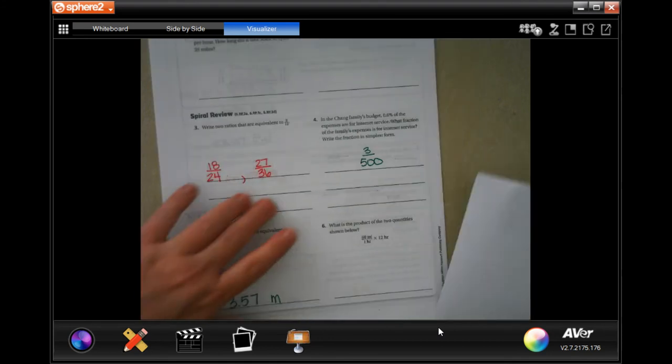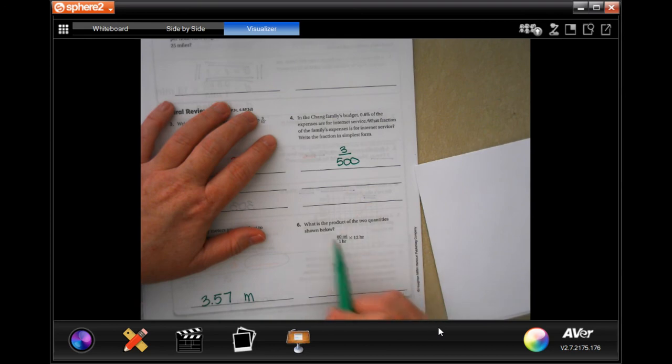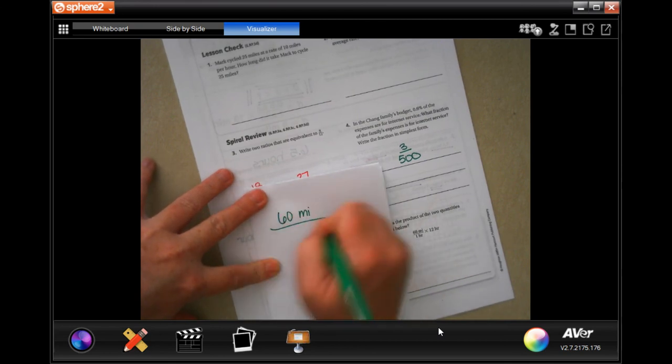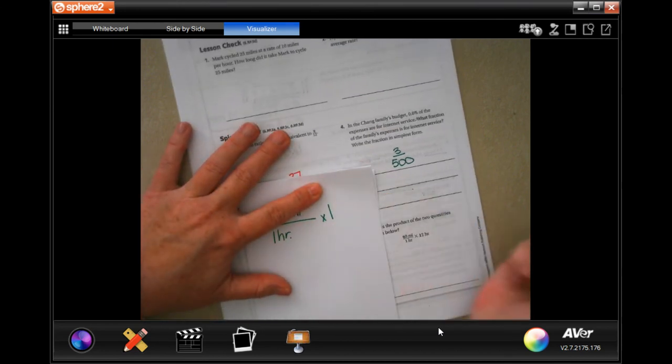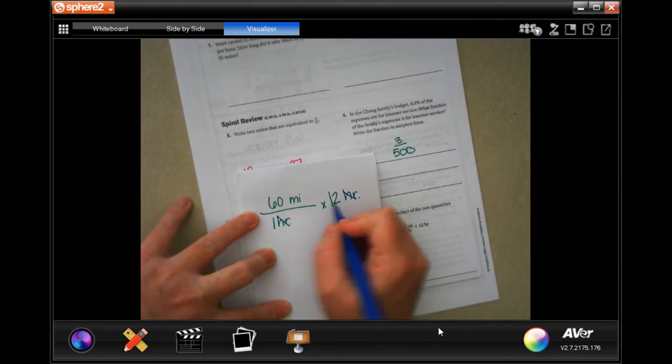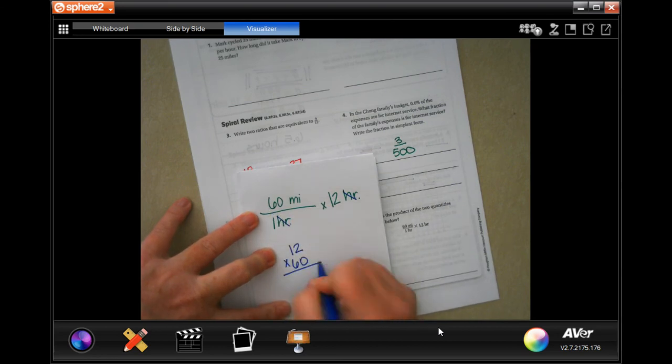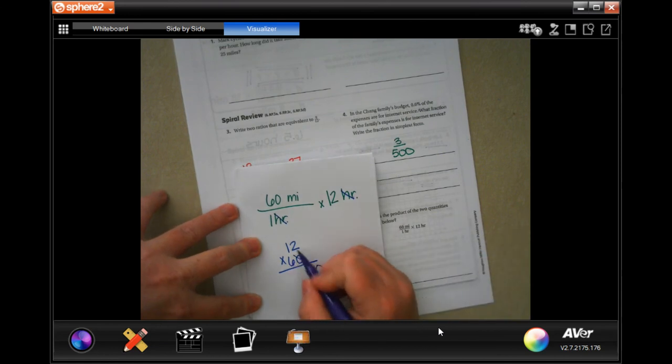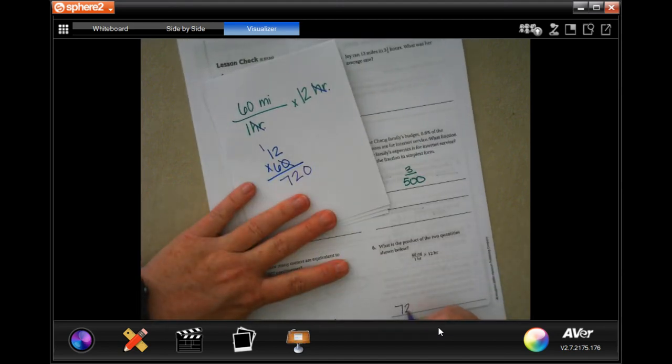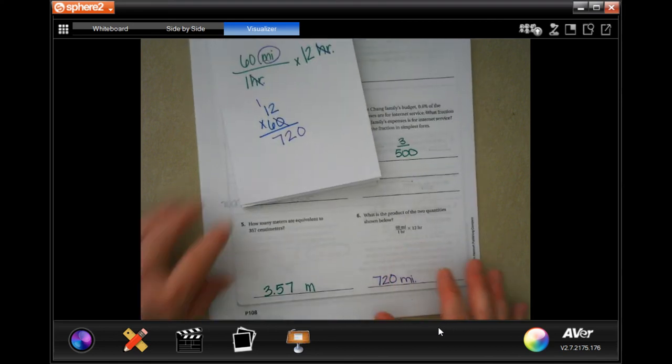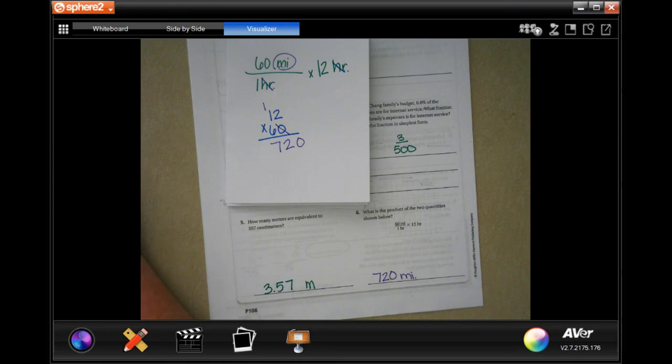Last one of the chapter, guys. What is the product of the two quantities shown below? So, we have 60 miles in one hour, by 12 hours. So now, we're done with hours. So now, we just have to do 12 times 60. Notice I put 60 on the bottom. Well, I did that because then I can do this. Boom. 6 times 2 is 12, carry that 1. 6 times 1 is 6, plus 1 is 7. So, 720, and we're left with miles. All right, guys. Make sure you write down your work. Good job on 6.5.